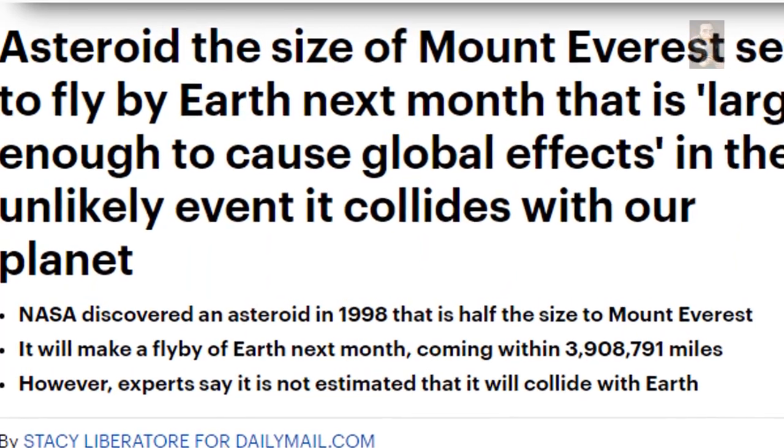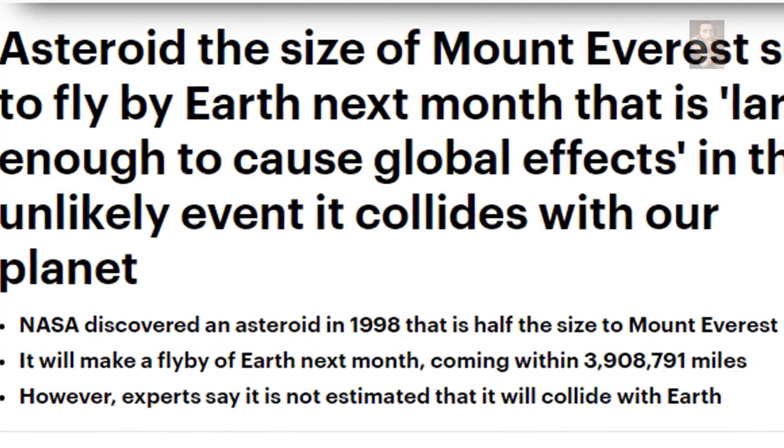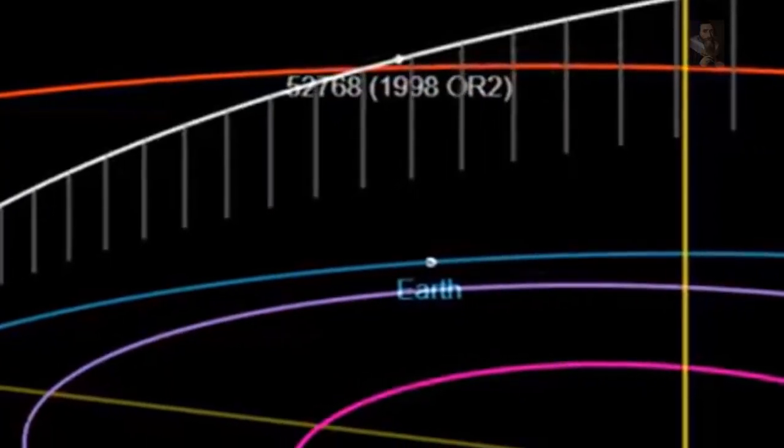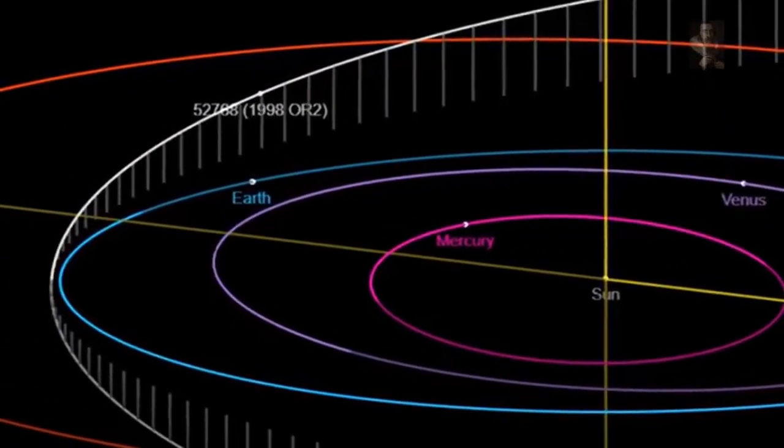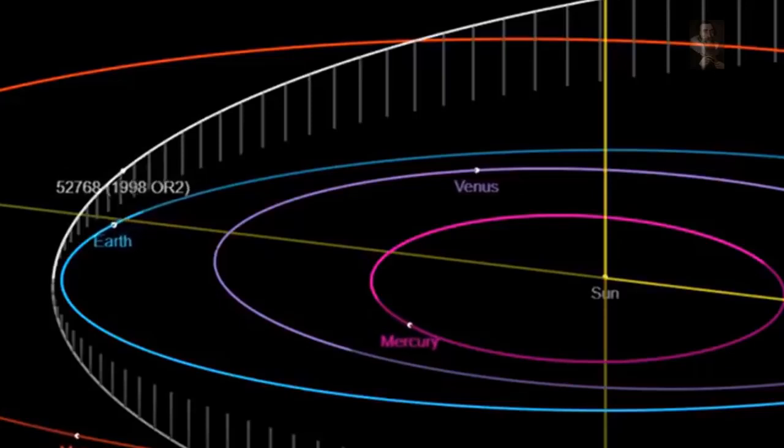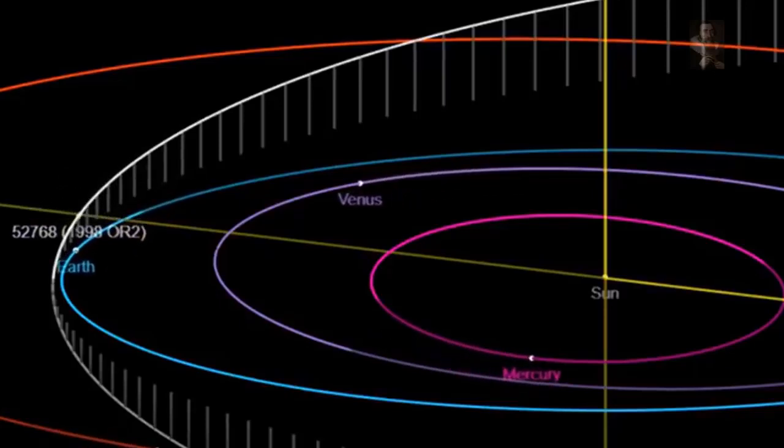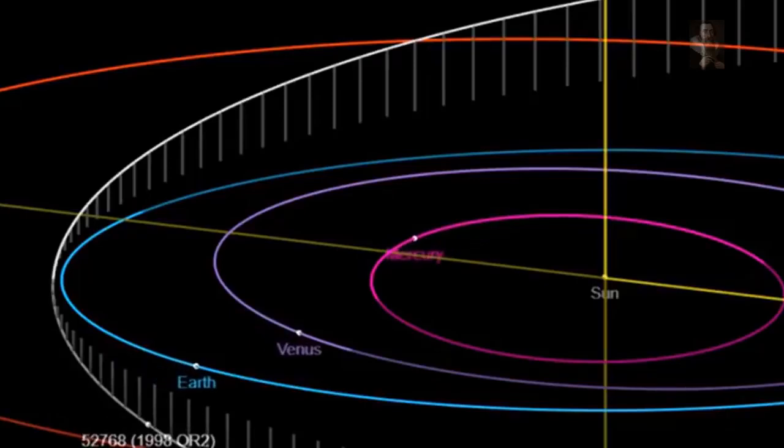The most notable object this year is a huge asteroid half the size of Mount Everest that is set to skim past our planet in April, the largest that will pass us this year. Asteroid 1998 OR2 will be at its closest distance from Earth on April 29th, with amateur astronomers in possession of smaller telescopes having the opportunity to see it as a slow-moving star.